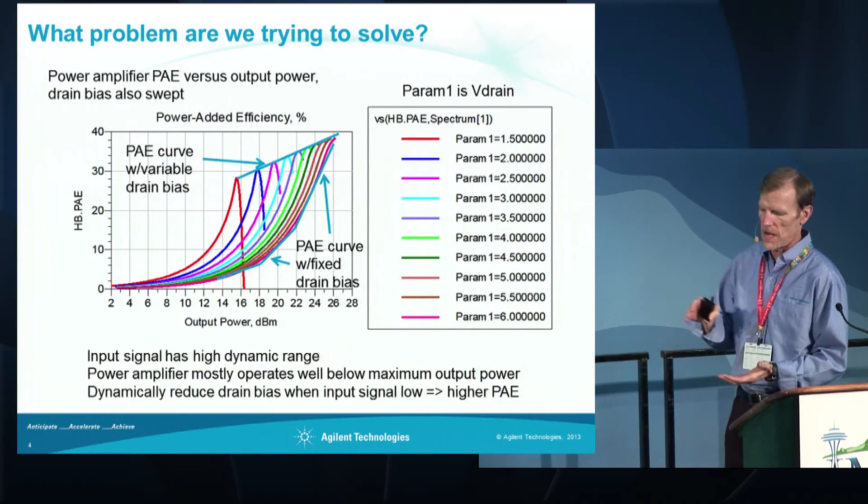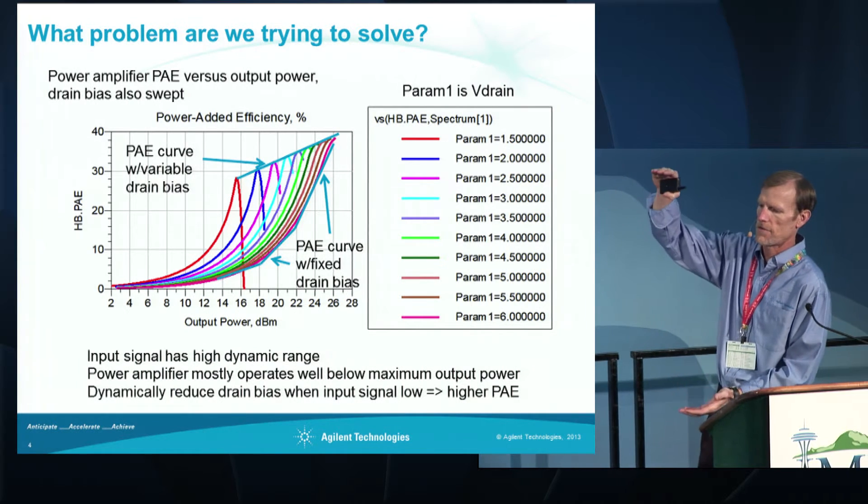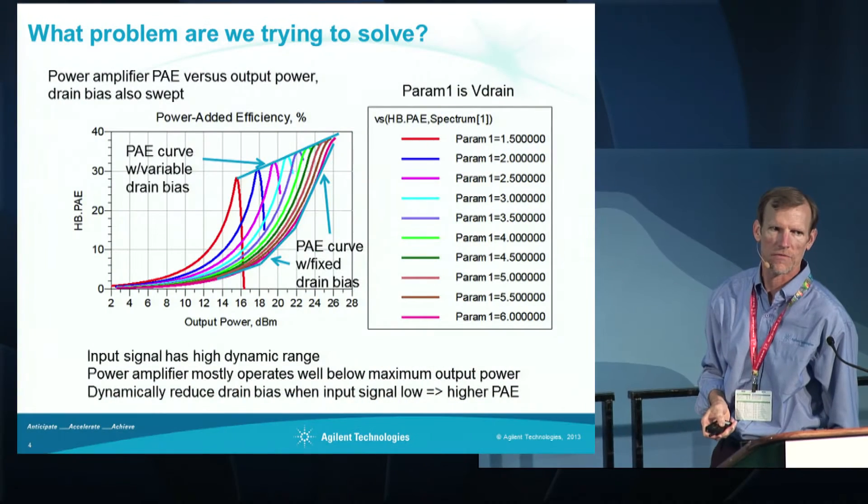In basic terms, if you have a power amplifier biased for high level signals and your signal is small, then you're basically wasting a lot of power. The idea is that if you can dynamically adjust the bias to track the amplitude of the input signal, then you can keep the amplifier operating along the curve of higher power added efficiency.